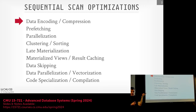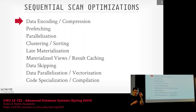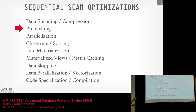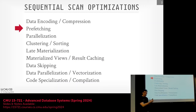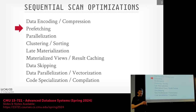Today's class is about data encoding and compression — how to minimize the amount of storage space it takes to represent data and represent tuples. Prefetching is identifying what data I'm going to need as I'm scanning along the table and bringing those things into memory before the execution engine actually needs it. So when it goes and says 'I need this block,' it's already here in memory or in a local cache.